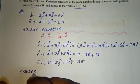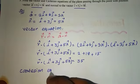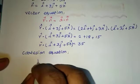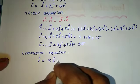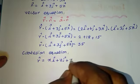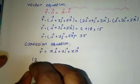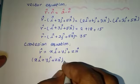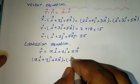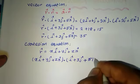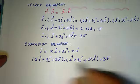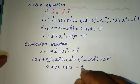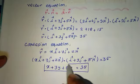Cartesian equation. The Cartesian equation derived from the plane is x + 3y + 5z = 35.